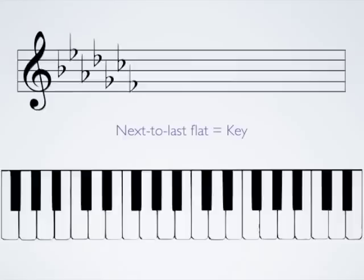For example, if the key signature has three flats, they must be the first three in this order: B, E, A. In this case, the next-to-last flat is E flat, so three flats is the key of E flat major.